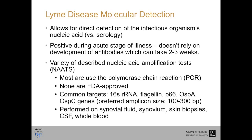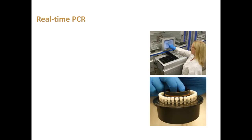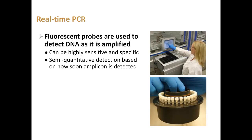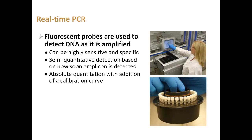These NATs are performed on a number of different specimen types: synovial fluid, synovium, skin biopsies, cerebrospinal fluid, and whole blood. The most common method used for detection of Lyme disease is real-time PCR, where fluorescent probes detect DNA as it is amplified — unlike conventional PCR where detection occurs after the reaction is finished. This can be very sensitive and specific if designed correctly, and it is semi-quantitative because the sooner the amplicon is detected, the higher the amount of DNA present in the patient's specimen.